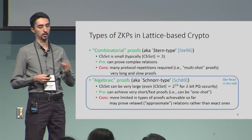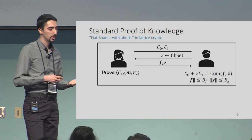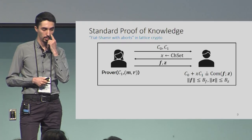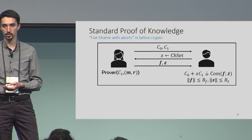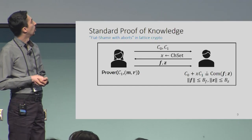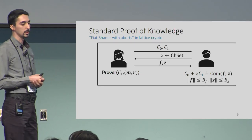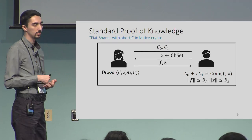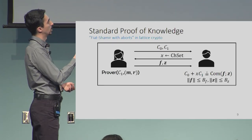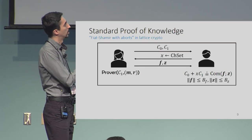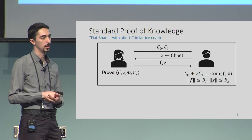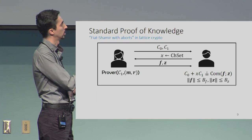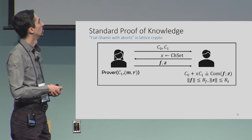Our focus is on the algebraic type. Looking at the general structure of a standard proof of knowledge — often called Fiat-Shamir with aborts in the lattice setting — the prover has commitments C0 and C1 as the first move, receives a challenge, and sends a response. The verifier checks that C0 plus X·C1 equals some commitment, and also checks that the inputs are upper bounded by some norm.